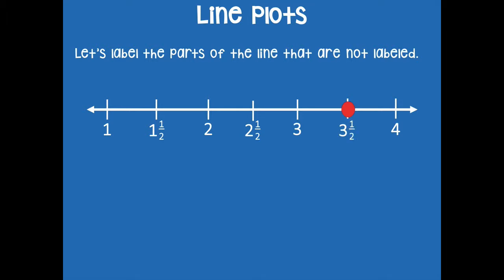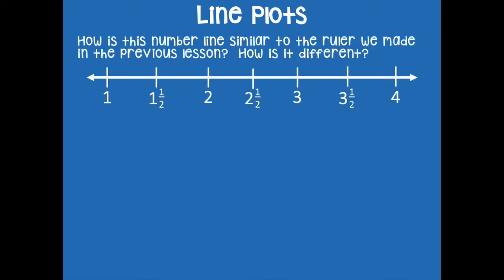So how is the number line similar to the ruler we made in the previous lesson and how is it different? So I should be thinking about the ruler that you guys made in the last lesson and this part of our number line. How is it similar and how is it different from each other?